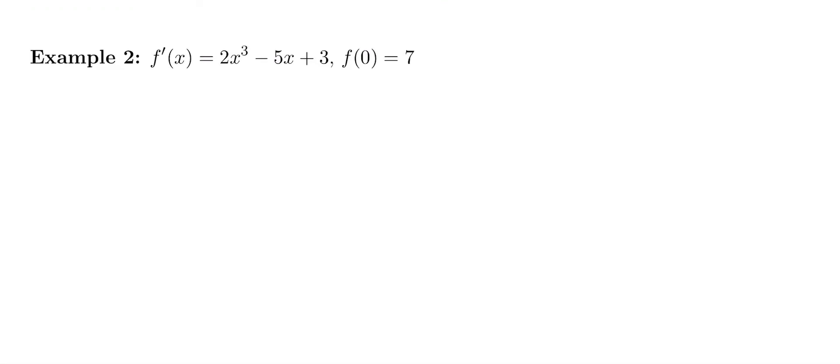Here we are going to solve this initial value problem. Solving an initial value problem just means finding the original function f(x) that has a derivative of this f' and also goes through the point (0, 7). So we're given a derivative and a point to go through, and we're going to do three steps to figure out what that original function was.